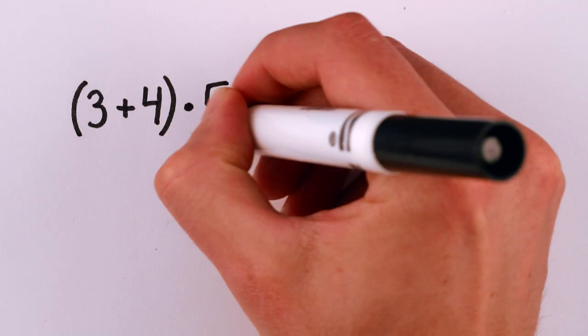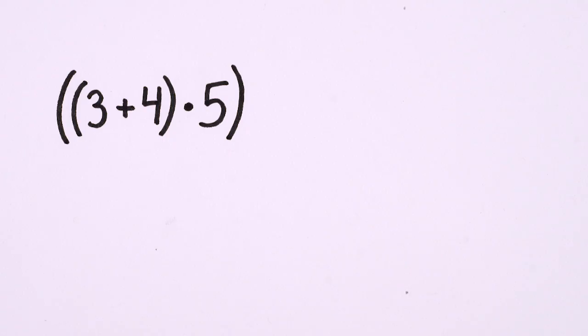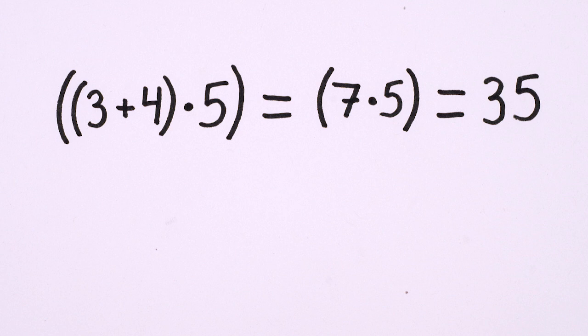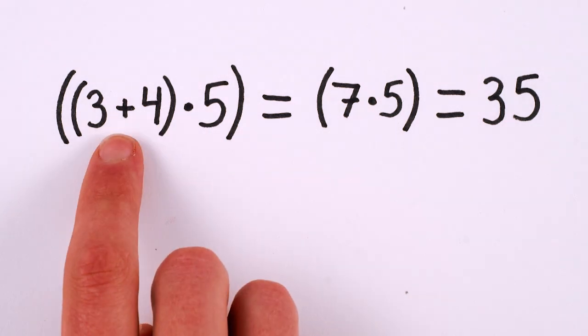For example, if you want to add 3 plus 4 and then multiply the result by 5, you can either do the addition first and get 7 times 5 equals 35, or you can do the multiplication first as long as you know that multiplication distributes across all the terms in the parentheses.